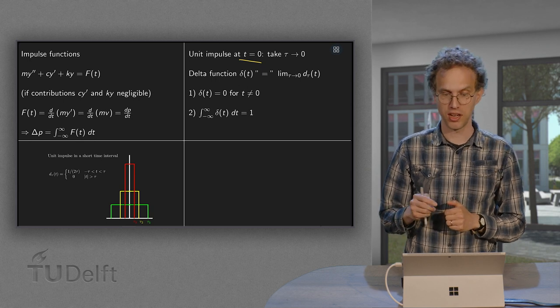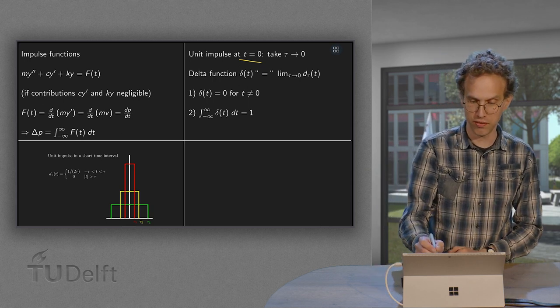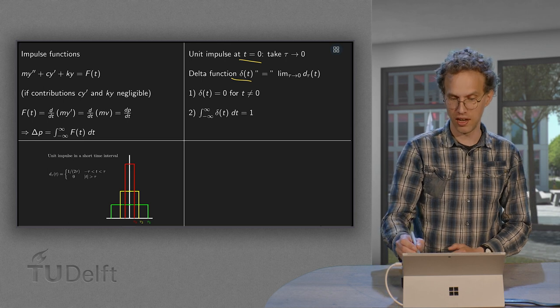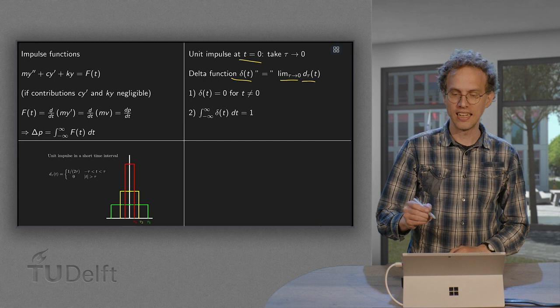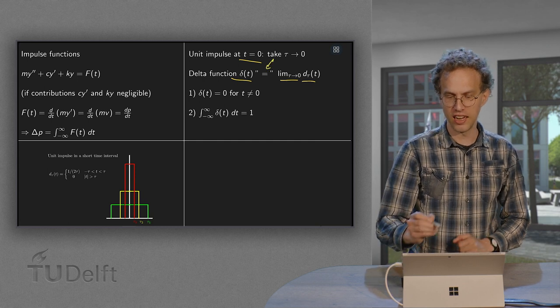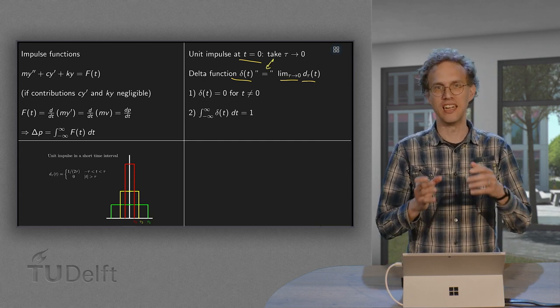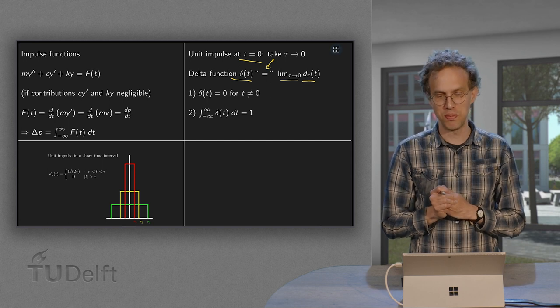And what we do then is we say, okay, that will become our delta function δ(t) ≈ lim_{τ→0} d_τ(t). I didn't put an equality here because what is happening here is a bit tricky.